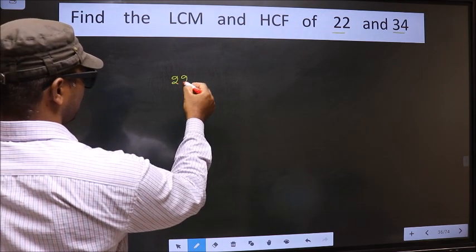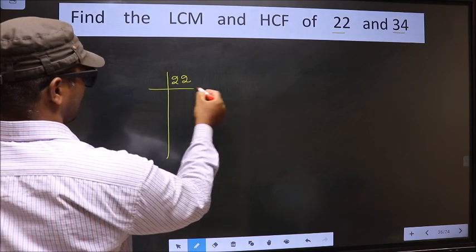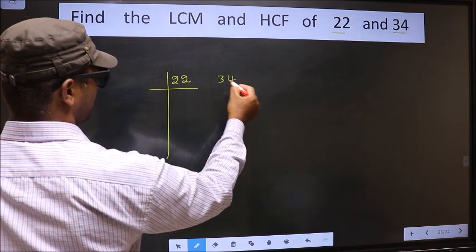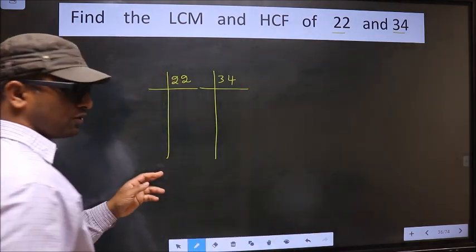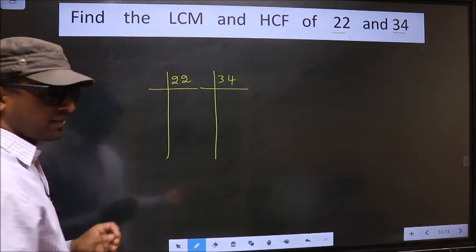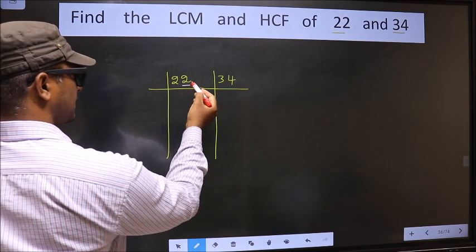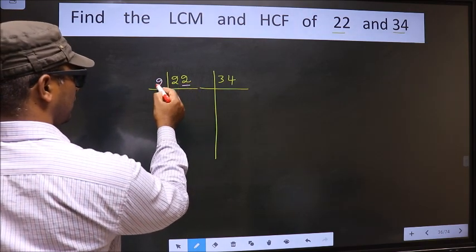22, 34. Okay, next. Here last digit 2, even, so we take 2 here. The first number 2, when do we get 2 in the 2 table? 2 once, 2.